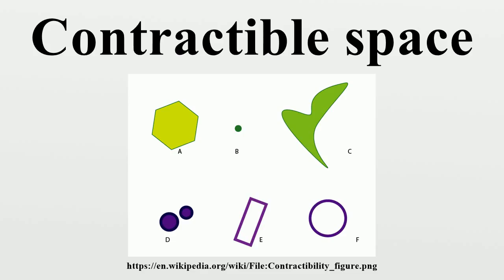A contractible space is precisely one with a homotopy type of a point. It follows that all the homotopy groups of a contractible space are trivial. Therefore any space with a non-trivial homotopy group cannot be contractible. Similarly, since singular homology is a homotopy invariant, the reduced homology groups of a contractible space are all trivial.